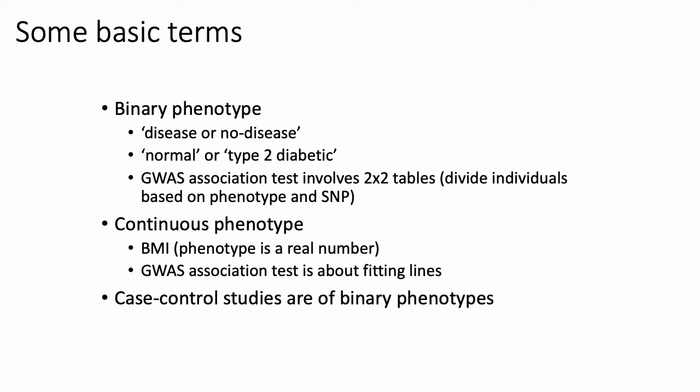Generally speaking, if you are looking at binary phenotypes — like case-control studies where you divide people into healthy and not-healthy groups, such as normal or type 2 diabetic — then typically you're using tests like Fisher's exact test that look at the distribution of people with a genetic variant and how that relates to the distribution of people who have a given trait.